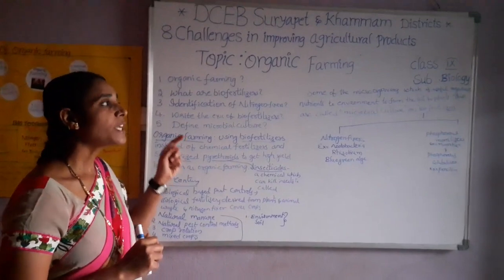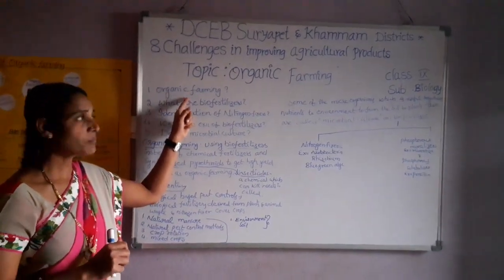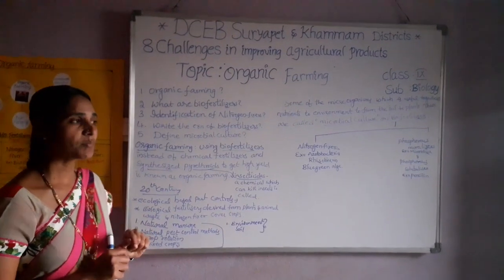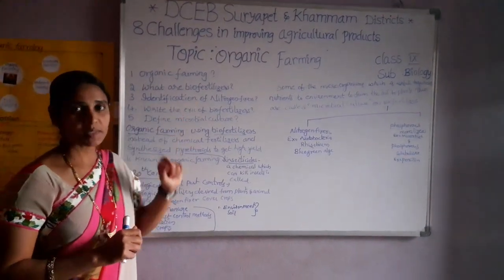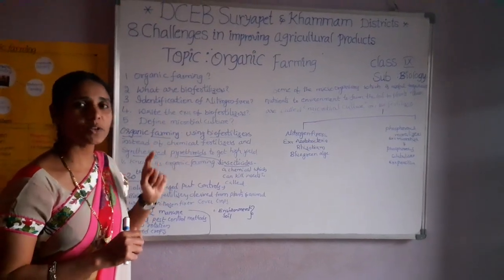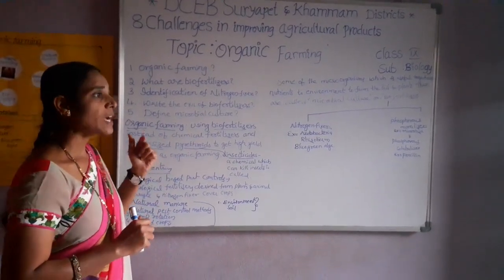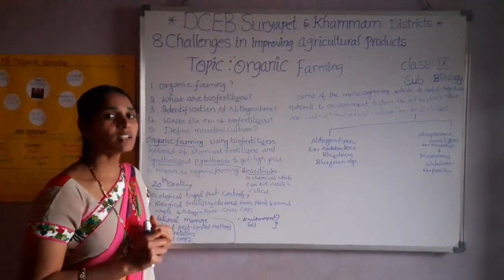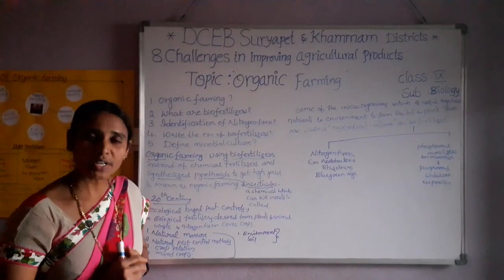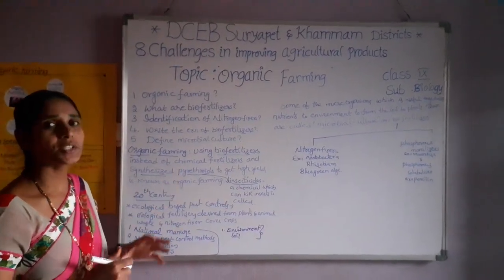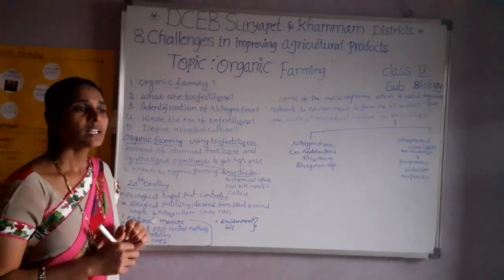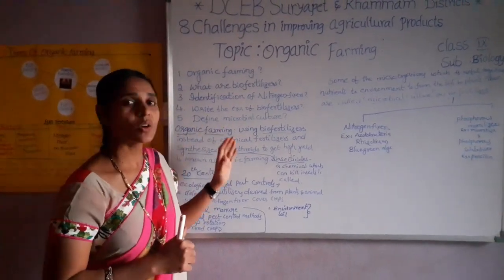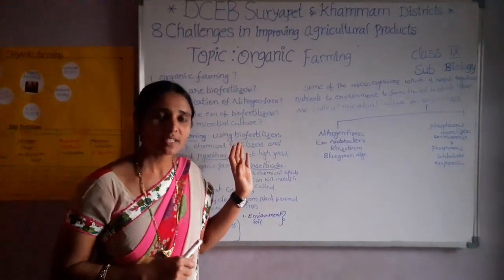Let us evaluate ourselves. What is organic farming? What are bio-fertilizers and microbial cultures? Identification of nitrogen fixers. Write the examples of bio-fertilizers. How many types of bio-fertilizers are there? Define microbial culture. Write the flow chart of bio-fertilizers. You should write all these and show your teacher. I hope you understood this topic. Let us meet in the next class. Thank you.